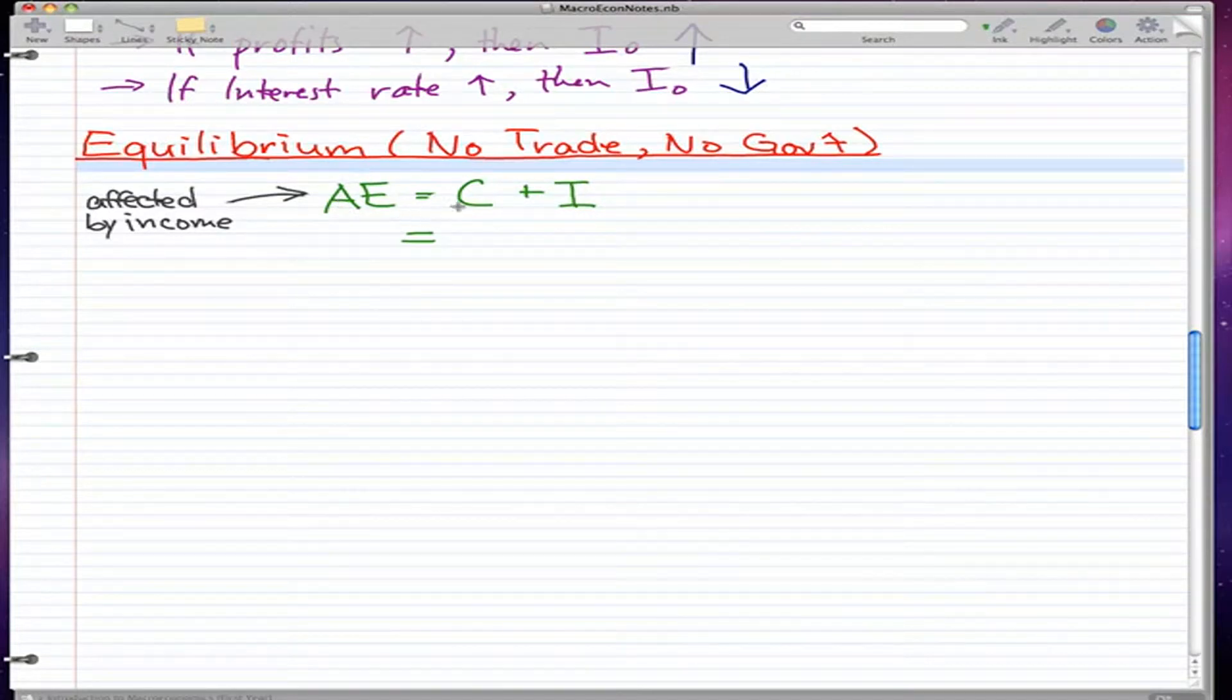So in the last video, in the previous videos, we learned that AE equals consumption plus investment. We're familiar with this formula.